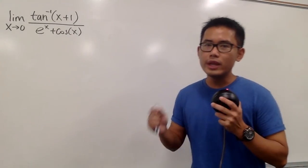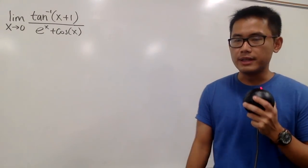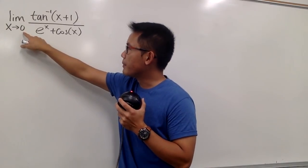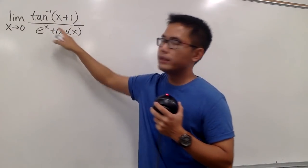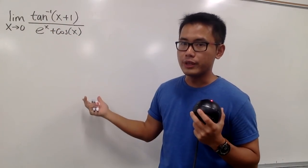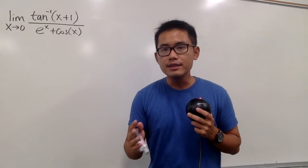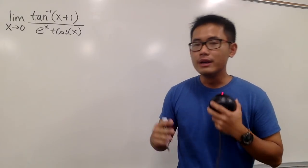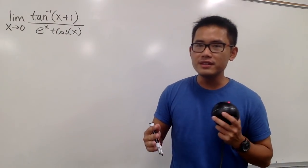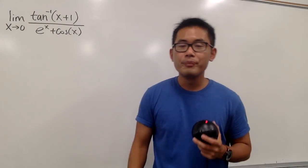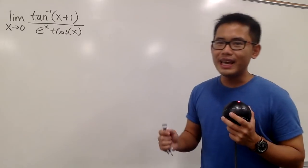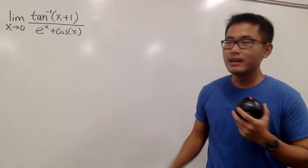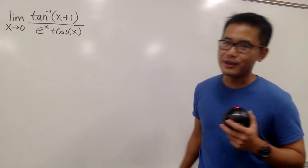The first thing we do whenever we're trying to calculate a limit is plug in the number into all the x's to see what we get. As long as we don't get 0 over 0, infinity over infinity, or any other indeterminate form, we'll be able to draw a nice conclusion.